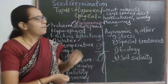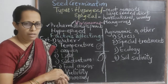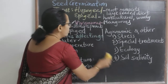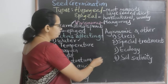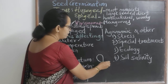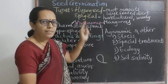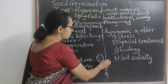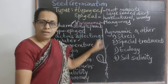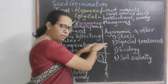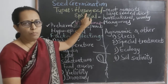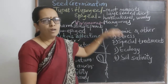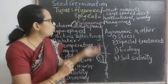Hypogeal means when the seedling growth occurs after sprouting. When the radical emerges out, we call it sprouting. In this case, the cotyledons of the seed remain below the soil — this type we call hypogeal germination. It is observed in most monocots and some dicots which have larger seeds.